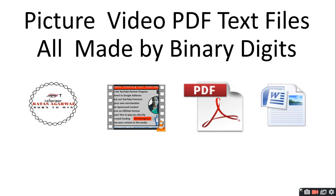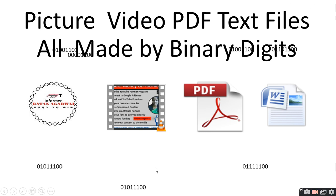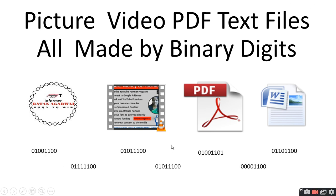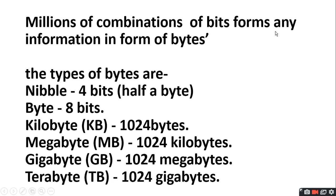Ab aap apni information ko 0 and 1 ke combination mein — chahe picture ho, chahe video ho, chahe PDF ho, chahe text file ho, ya kisi bhi tarah ki file ki information ho — wo hum bit ke form mein store karte hain. All made up by binary digit bit 0 and 1. To millions of bits mil karke ek file ki information banati hai. Saari bhi file ki information 0 and 1 ke combination mein store hoti hai. Millions of combinations of bits form any information in the form of bytes.